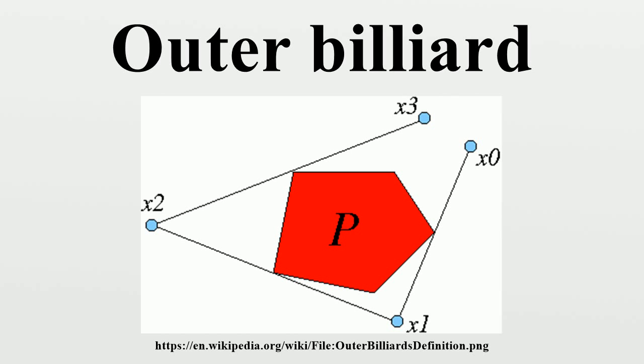Moser-Neumann question. Bounded orbits in the Euclidean plane: In the 70s, Jürgen Moser sketched a proof, based on K.A.M. theory, that outer billiards relative to a six-times-differentiable shape of positive curvature has all orbits bounded. In 1982, Raphael Duadi gave the full proof of this result.